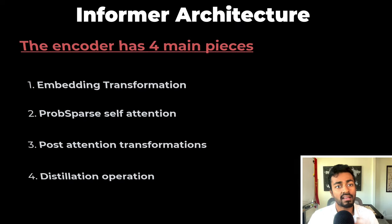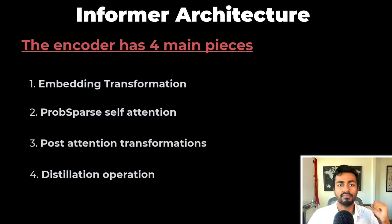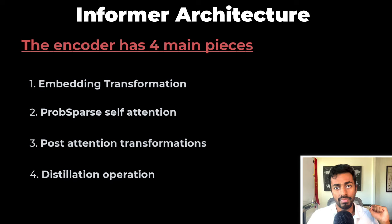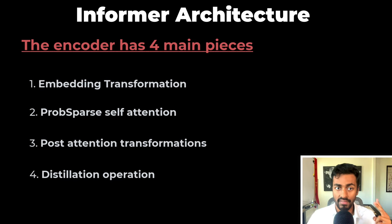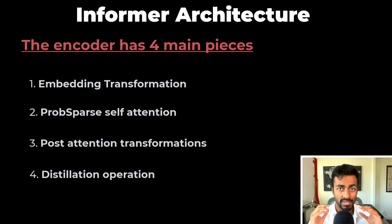For the second pass, we are going to drill into the encoder architecture. The encoder has four main pieces: the embedding transformation, prob sparse self-attention, post-attention transformations, and the distillation operation. Let's talk about each part as we dive into the architecture.